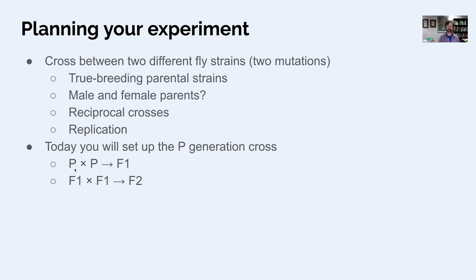So parental generation, at the end of two weeks, we should have the F1 offspring from that cross. And at that point, we will cross the F1 males by the F1 females to get, two weeks after that, F2 individuals.